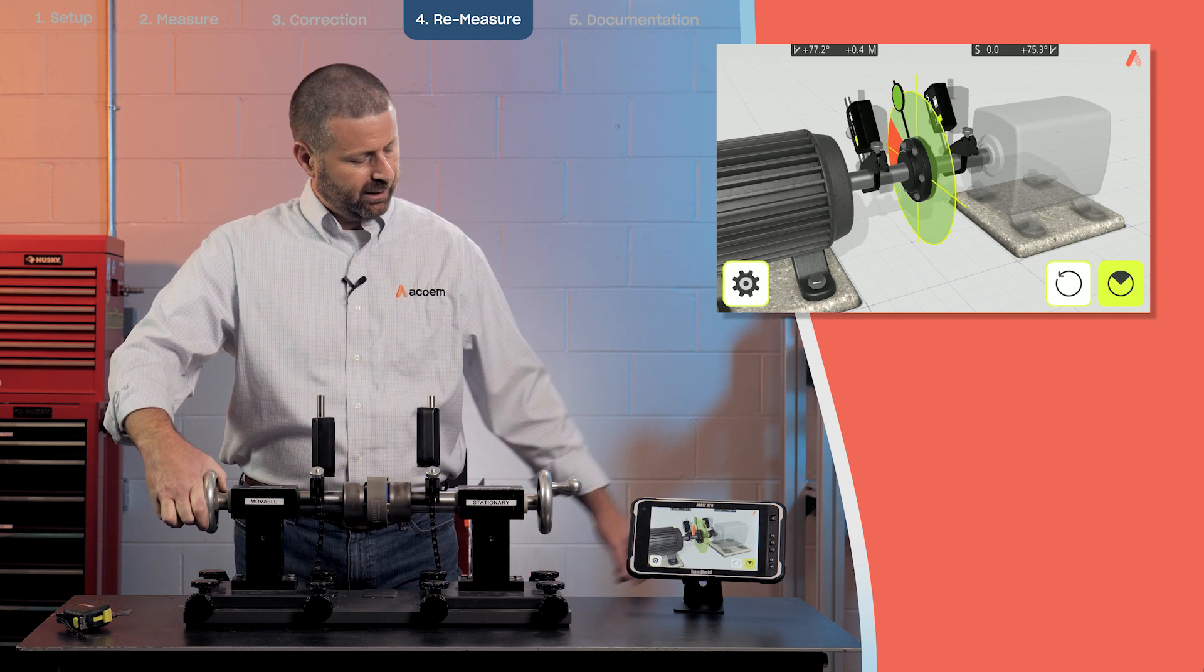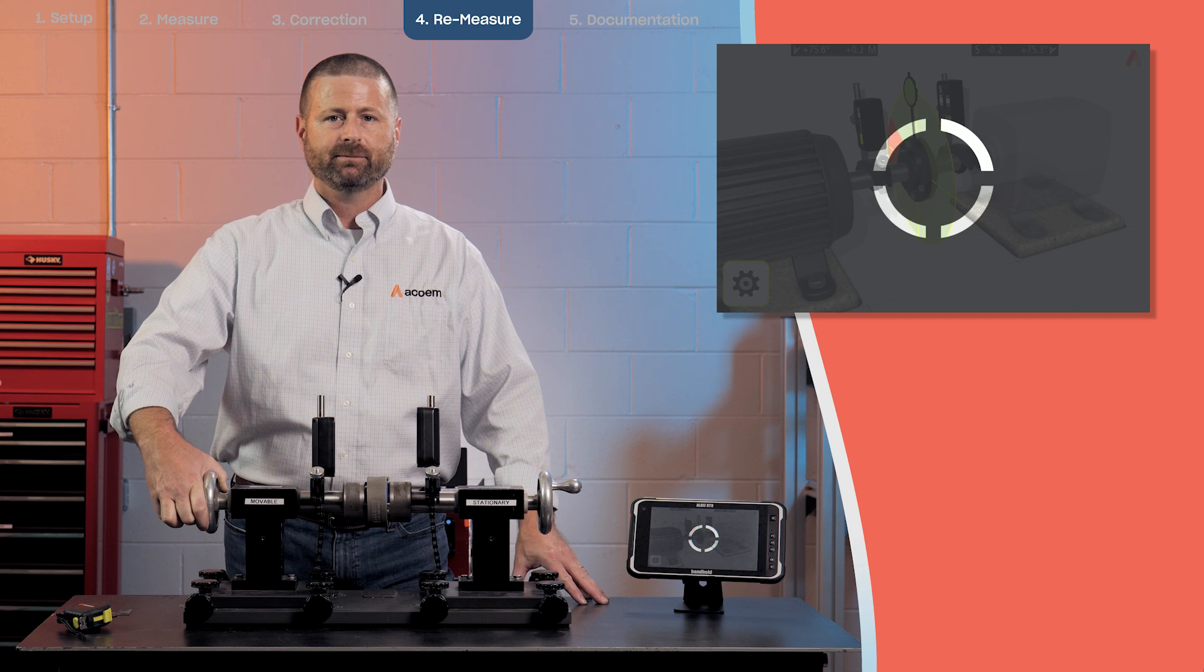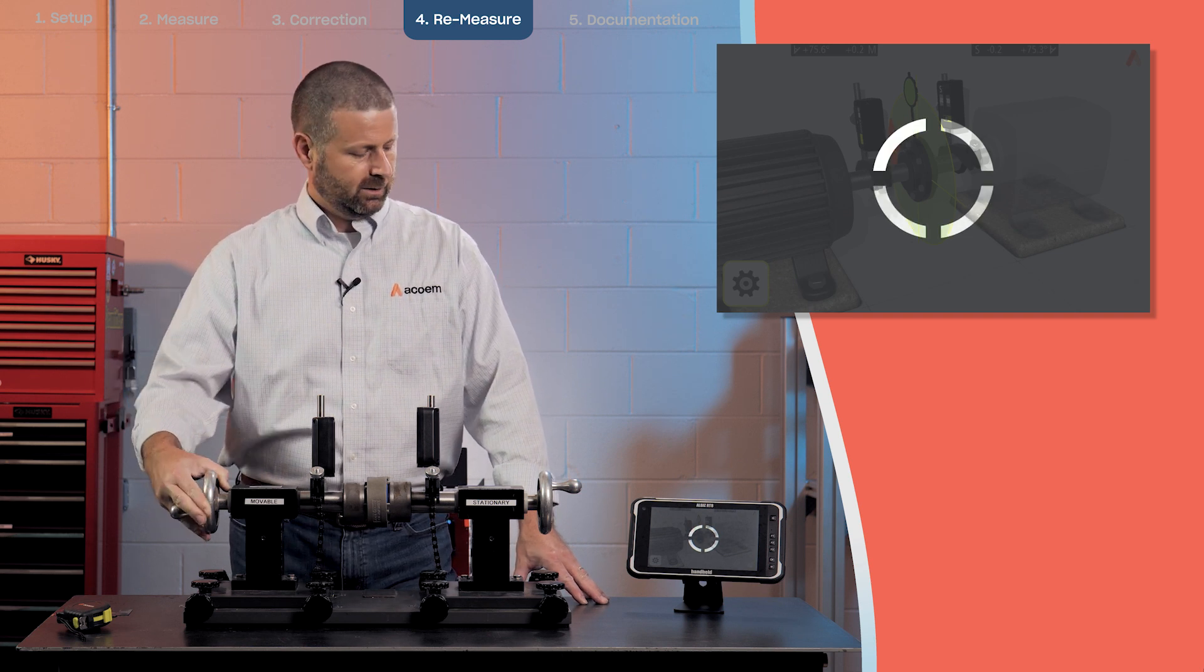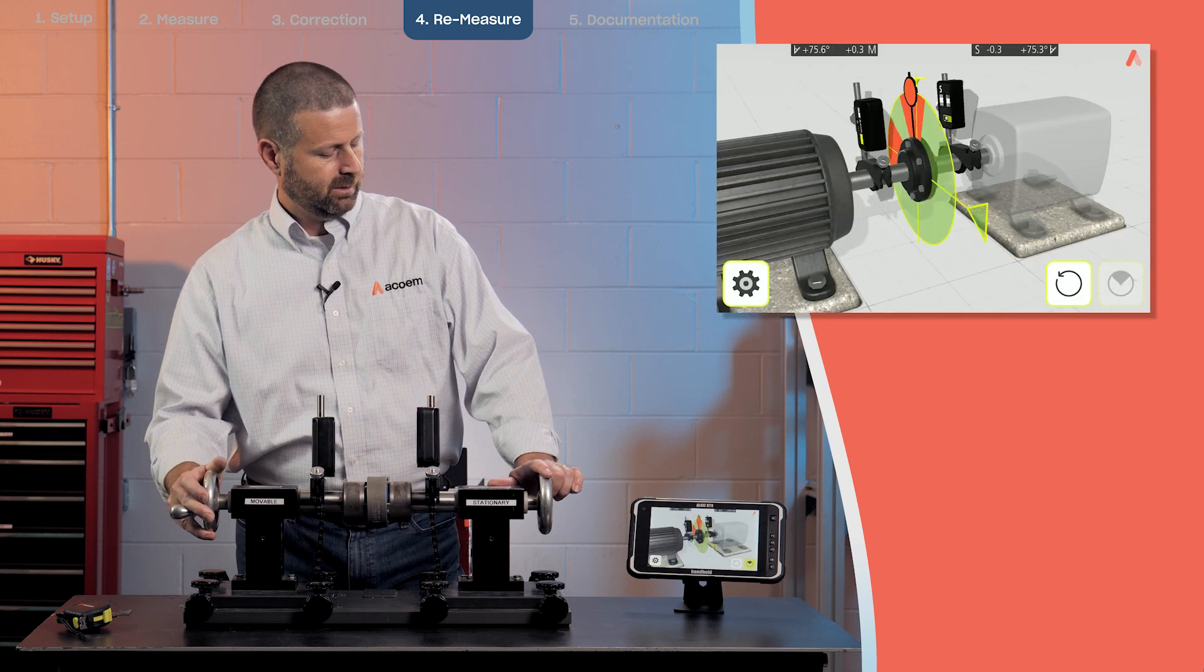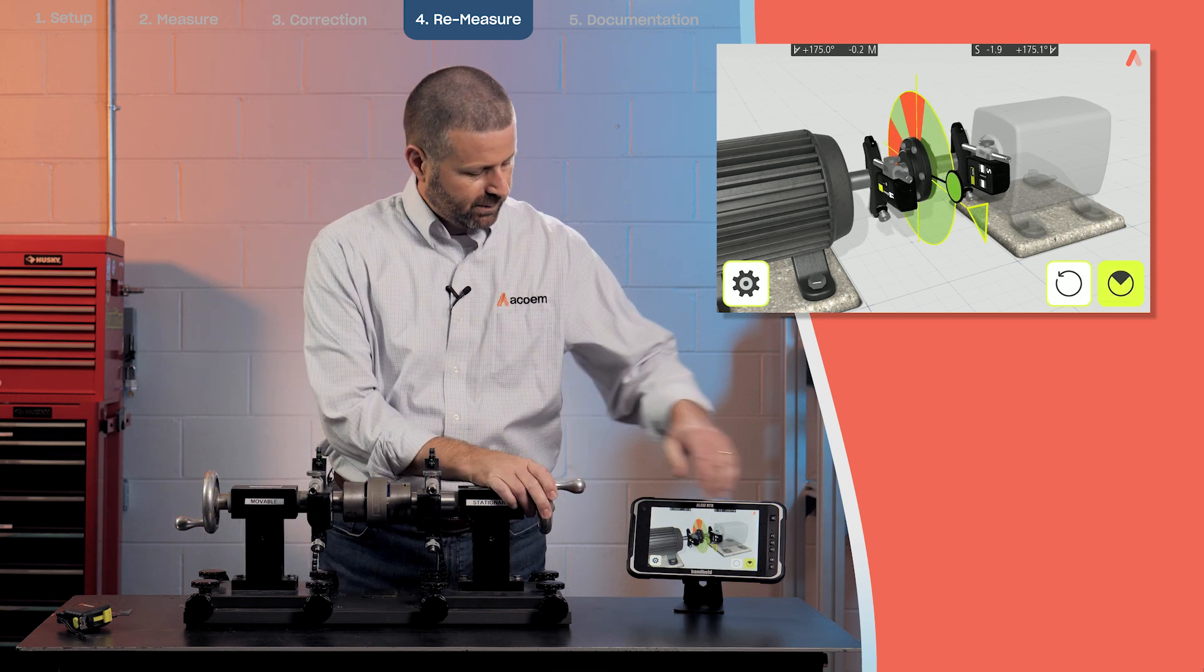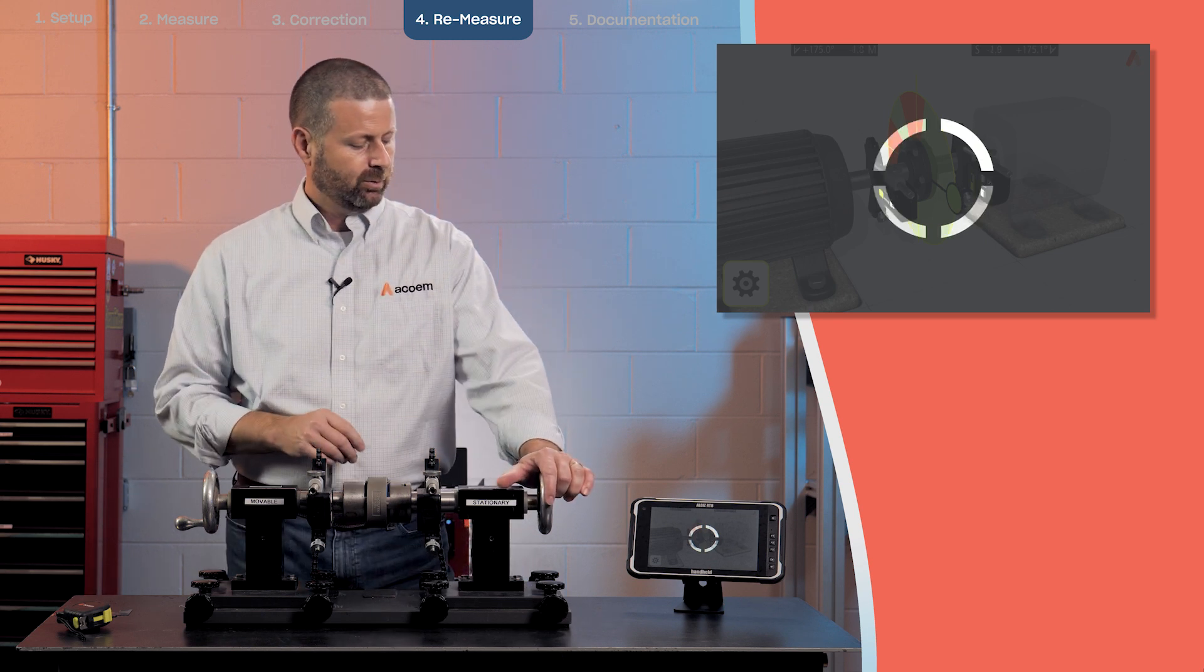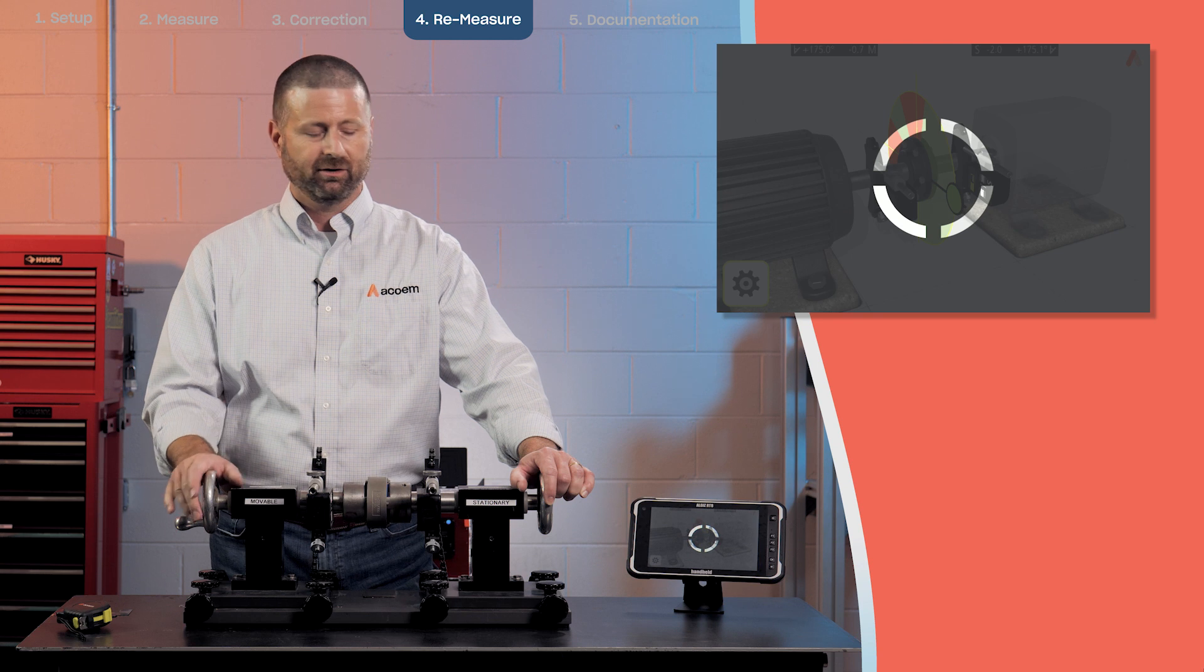Rotate outside the red. Take a second measurement. And again, to a third and final measurement. Once again, it's important not to rotate the shaft while the instrument is measuring.